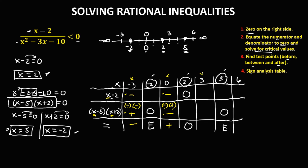For the test point x equals positive 3: x minus 2 gives 3 minus 2, which is positive 1 — positive. For x minus 5: 3 minus 5 is negative 2 — negative. For x plus 2: 3 plus 2 is positive 5 — positive. Negative times positive is negative. Then positive divided by negative gives a negative result.